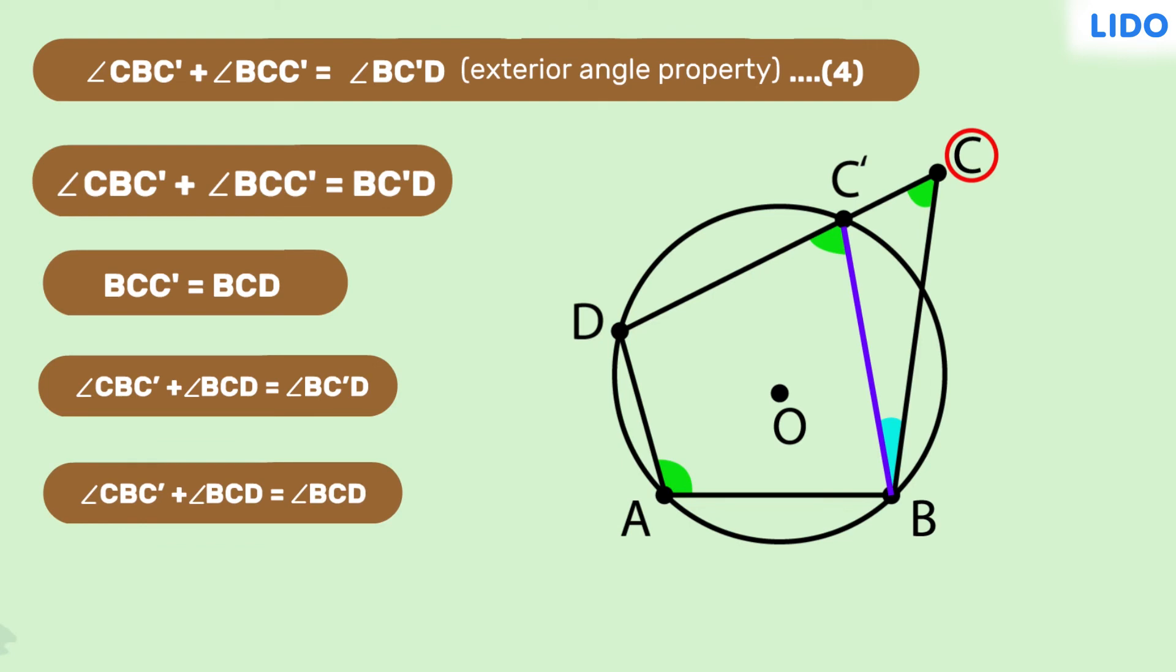Therefore, angle CBC' is 0. By this, we can say that C and C dash coincide with one another. So our assumption is wrong.